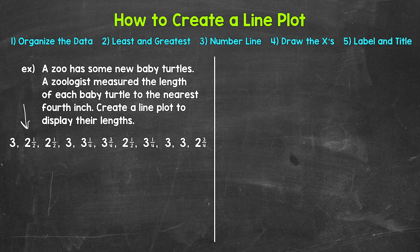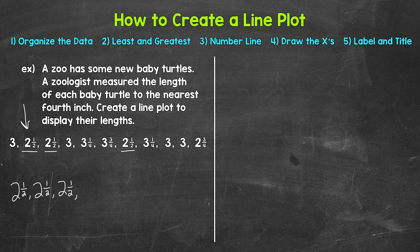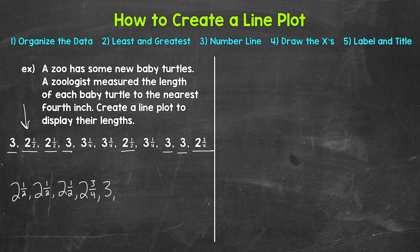We're going to put the data in order from least to greatest, which will make the numbers much easier to work with. Starting with the least, that looks like two and a half — we have three turtles that were two and a half inches long. Since we are working with fourths, we're counting up by a fourth. Next is two and three fourths — we have one turtle. Next is three — we have four turtles that were three inches long. Next is three and one fourth — we have two turtles that were three and one fourth inches long.